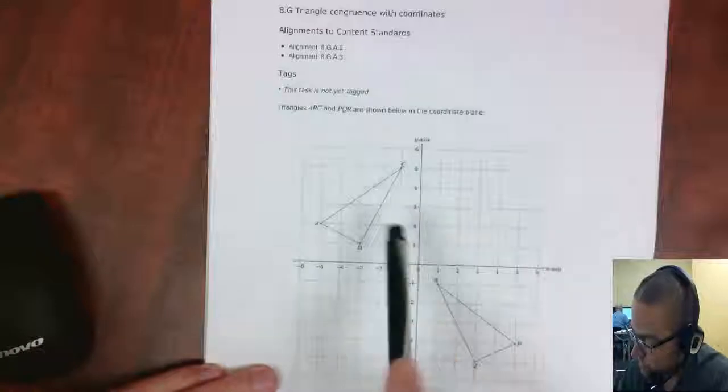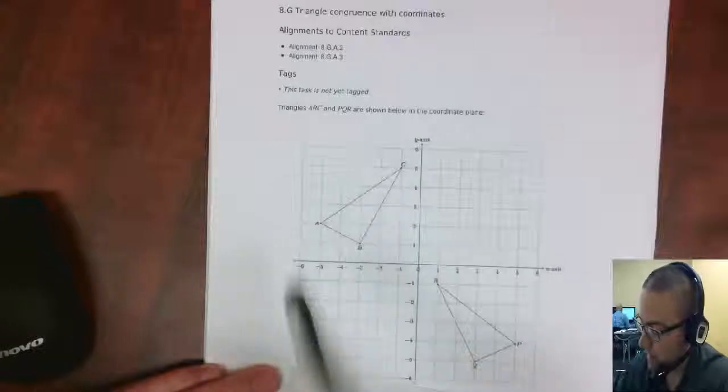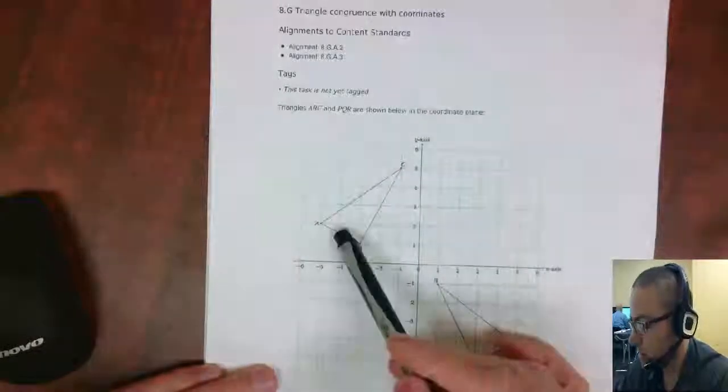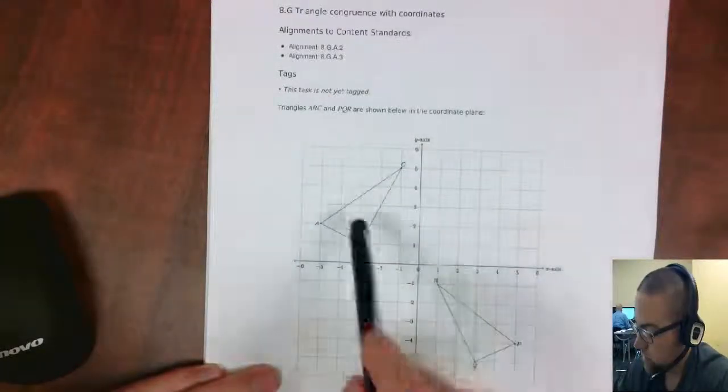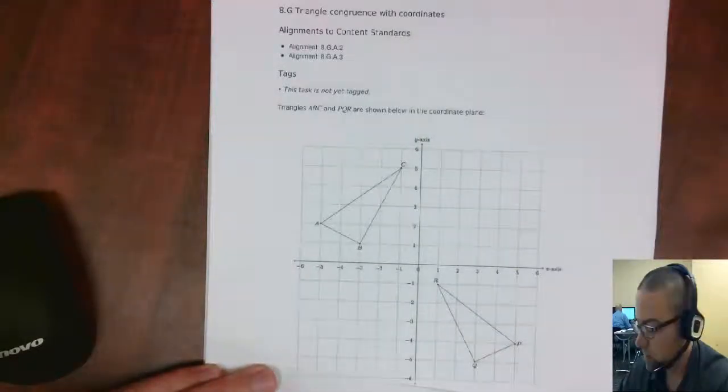Now, if I want to see if these two triangles here are congruent, if I can do a pattern of isometries to get this shape to map exactly onto this shape, then I can say the two triangles are congruent.